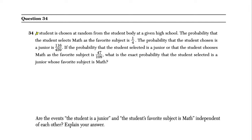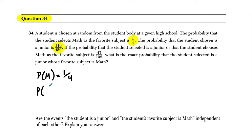Hello, welcome. This is a probability question from January 2018. We're told that a student is chosen at random from a student body, and the probability that the student selects math as their favorite subject is one-fourth. The probability that they pick math is 1 out of 4. The probability that the student chosen is a junior is 116 out of 459.